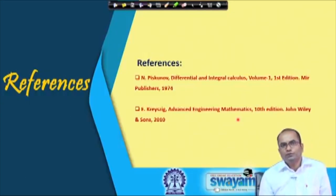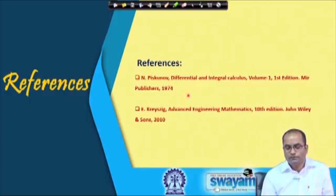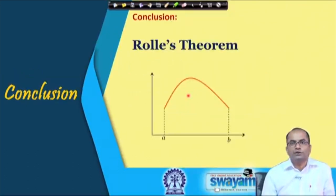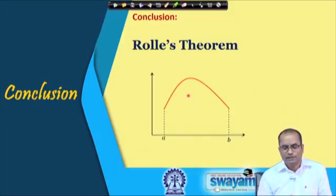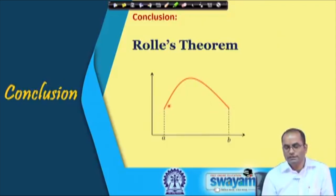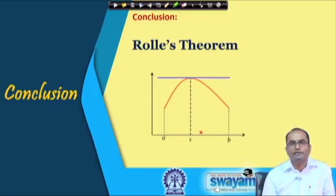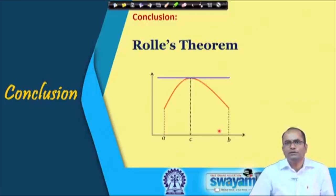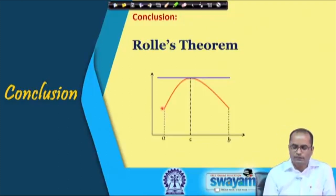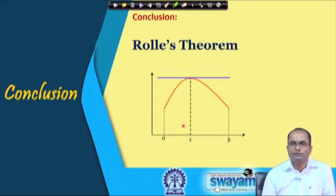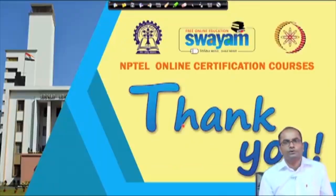The references used to prepare this lecture are Piskunov's 'Differential and Integral Calculus, Volume 1' and Kreyszig's 'Advanced Engineering Mathematics'. In conclusion, we have studied Rolle's theorem: if a function is continuous on [a,b], differentiable on (a,b), and f(a) = f(b), then there exists a point c in (a,b) where the tangent is parallel to the x-axis. This is a particular case of the mean value theorem, which we will discuss in the next lecture, where the condition of equal endpoint values will be removed.